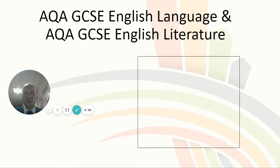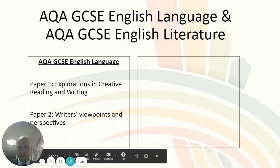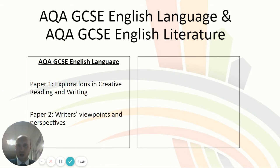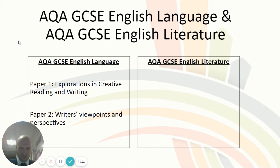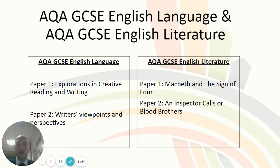In English we obviously study two qualifications: English Language and English Literature. In English Language we look at Paper 1 and Paper 2 — initially students would have completed an assessment in Explorations in Creative Reading and Writing, and a Paper 2 looking at Writer's Viewpoints and Perspectives. In English Literature they would have studied two papers: Paper 1 covering Macbeth and The Sign of the Four, whereas Paper 2 covered An Inspector Calls or Blood Brothers depending on what they had studied, along with Power and Conflict poetry and some unseen poetry.